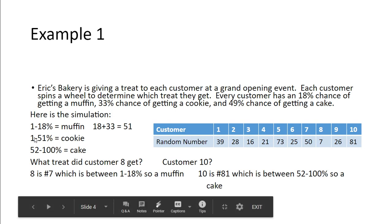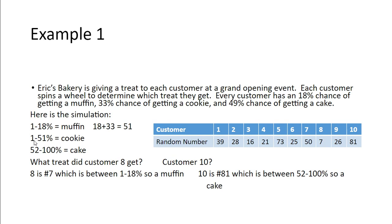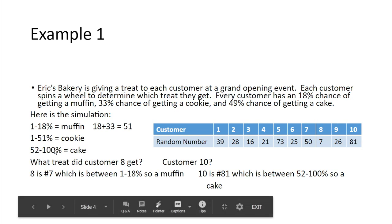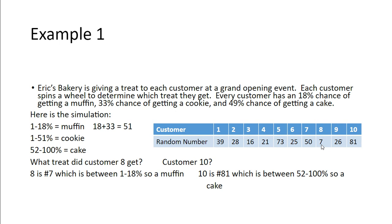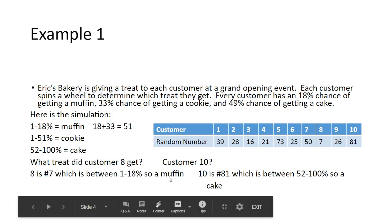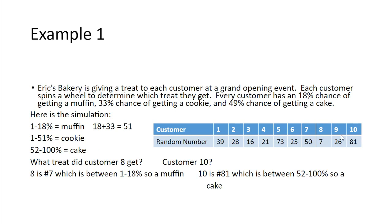So these are the same ones now, kind of bear with me here. This should actually say 19. It doesn't have that on there. I think I had my percentages a little bit off there. This would be 51, and then from 52 up to 100. So if you come over here and look at the table now, we have the question, what treat did customer 8 get? Well, customer 8 had the random number of 7. Well, 7 is in between 1 and 18%, so they would get a muffin. Customer 10 is at 81, which 81 falls in between 52 and 100%, so they would get cake.